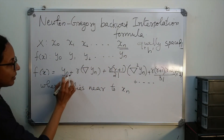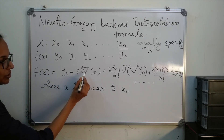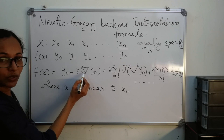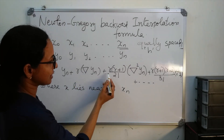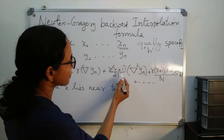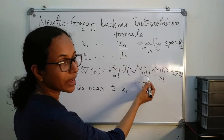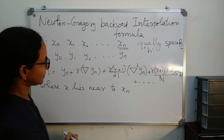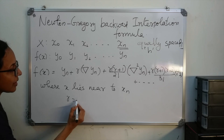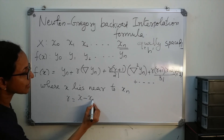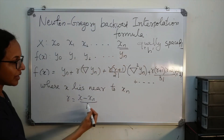f(x) is equal to yn plus r times the backward delta yn, plus r(r+1)/2! times the backward delta squared yn, plus etc. Here, r is equal to (x minus xn) divided by h.